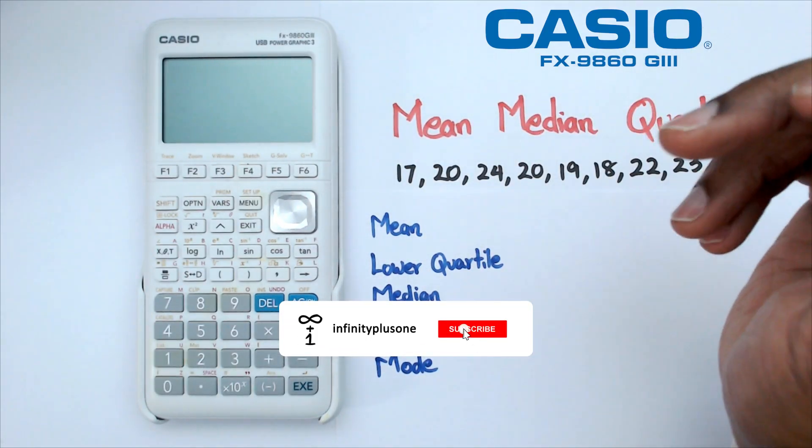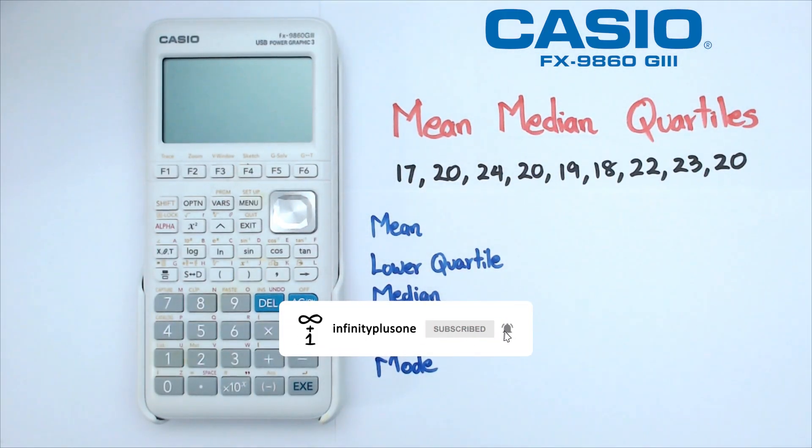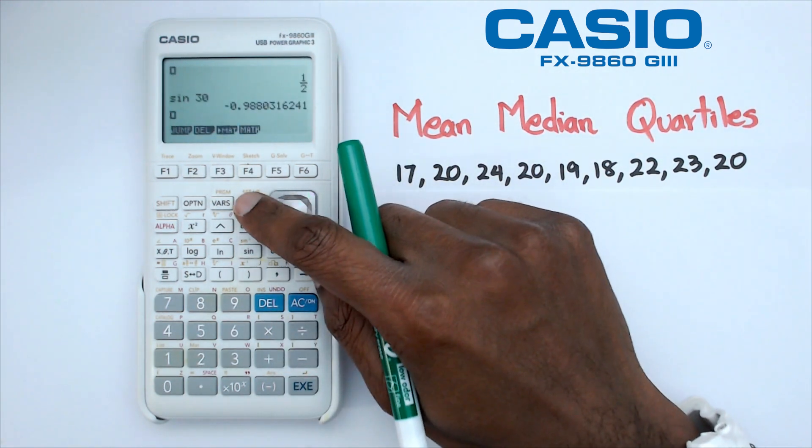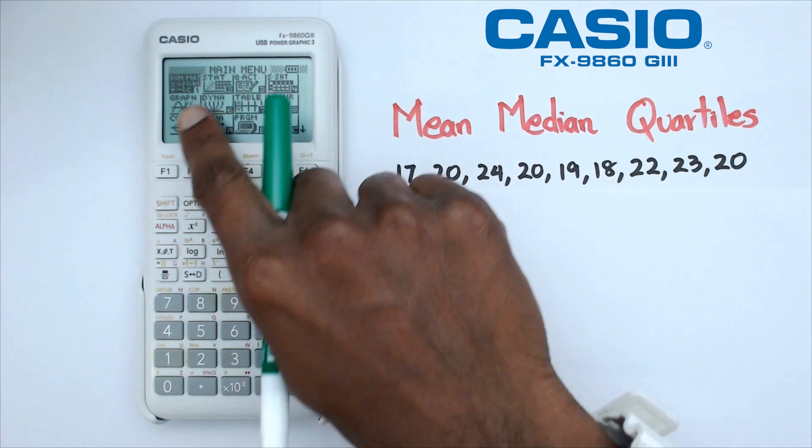Alright, so for this particular set of data, what we need to do is switch on the calculator first and we're going to click on menu, go down to the stat mode.